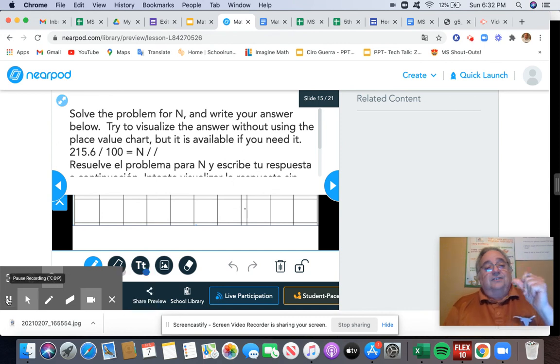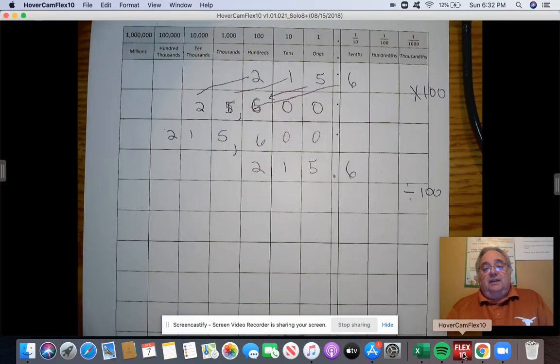Excellent, guys. Now what is the answer you got for this one? Pausing in 3, 2, 1. Excellent. You got 2 and 156 thousandths. That is correct. How do we know?